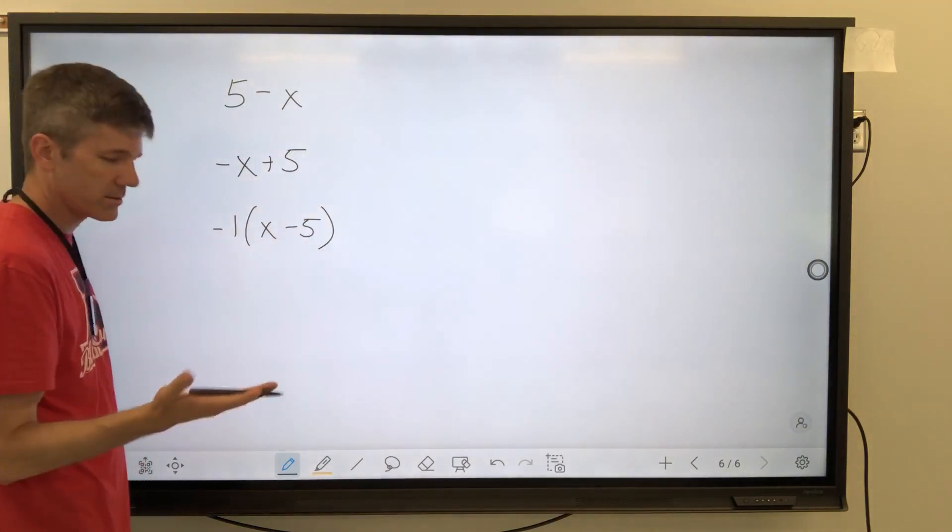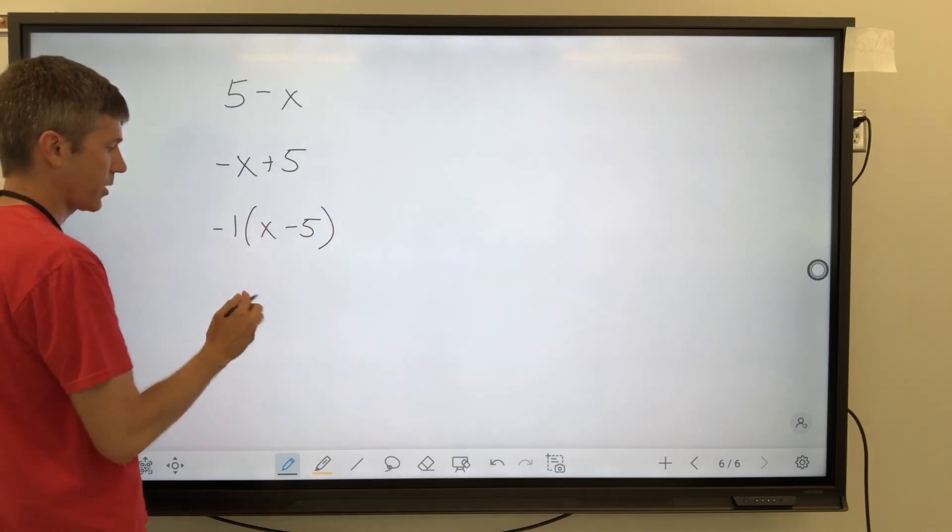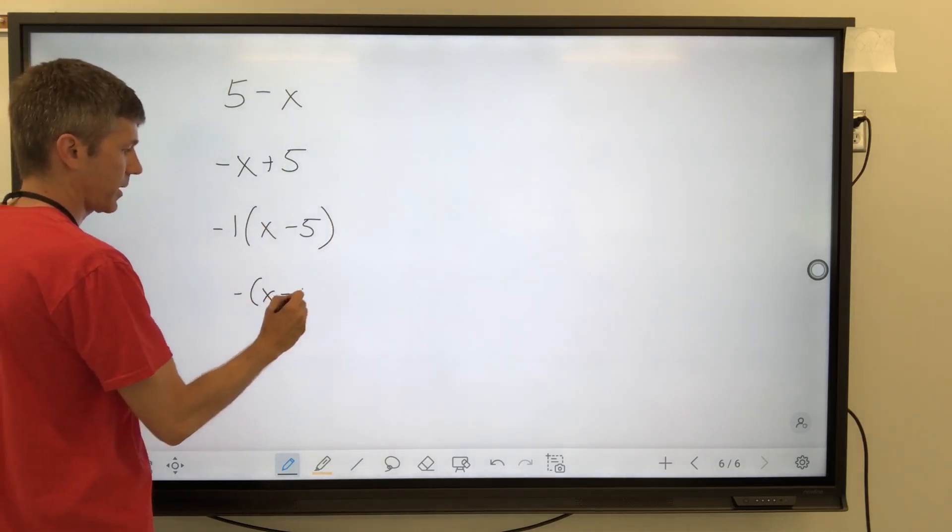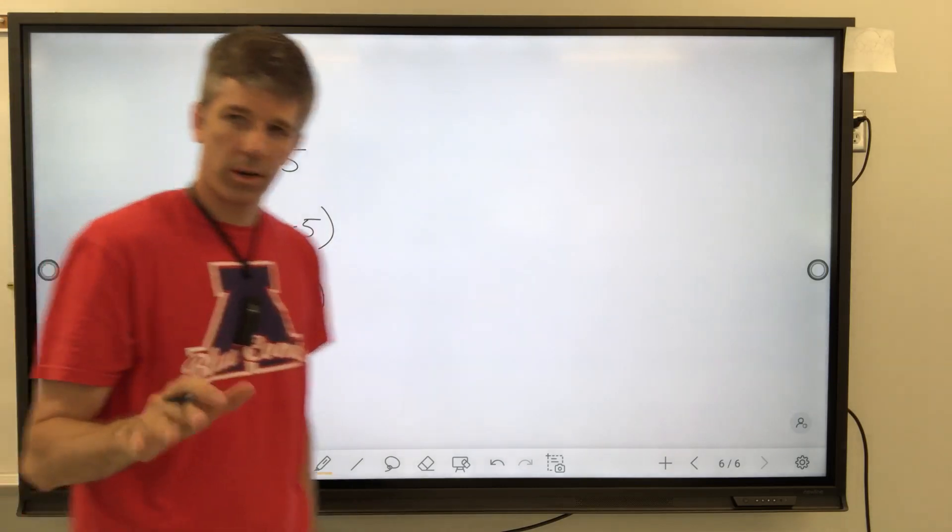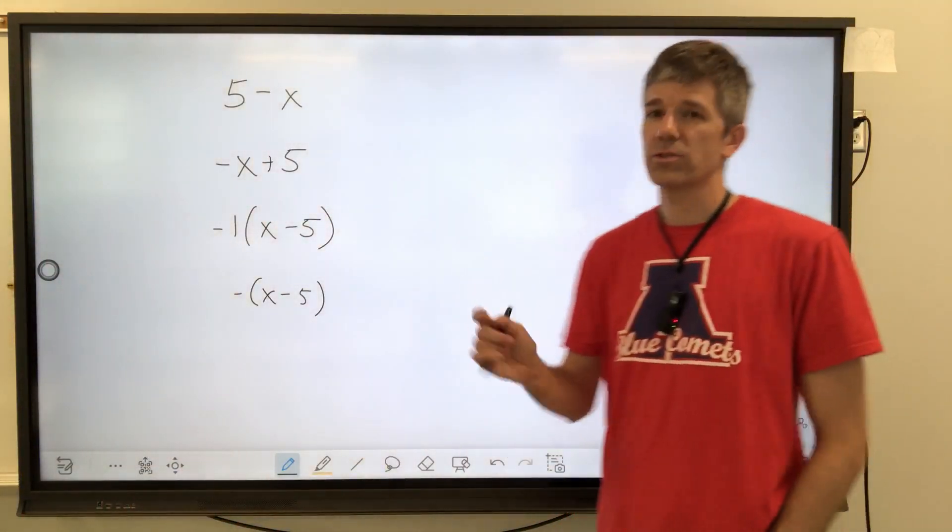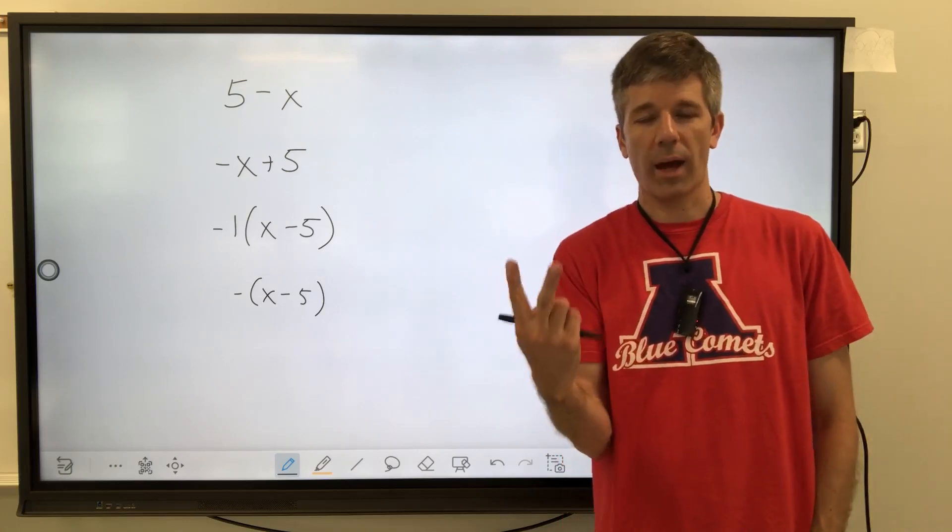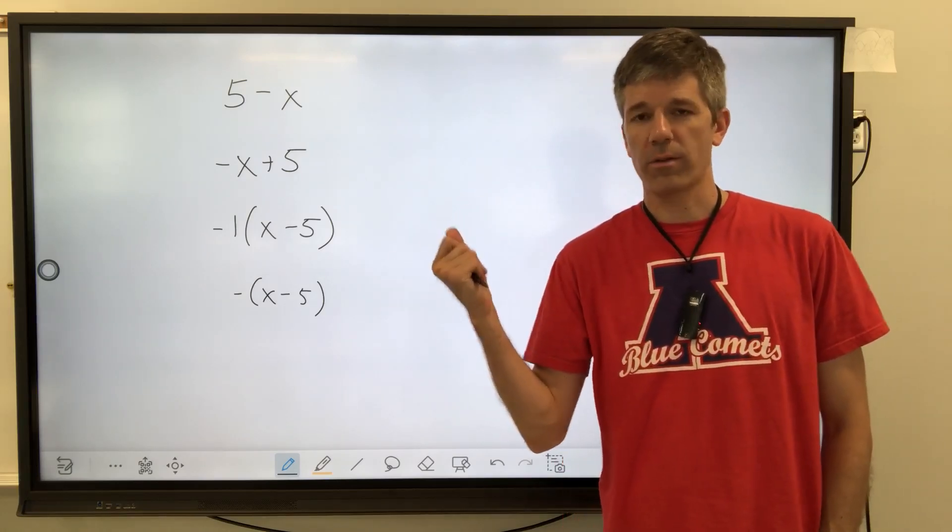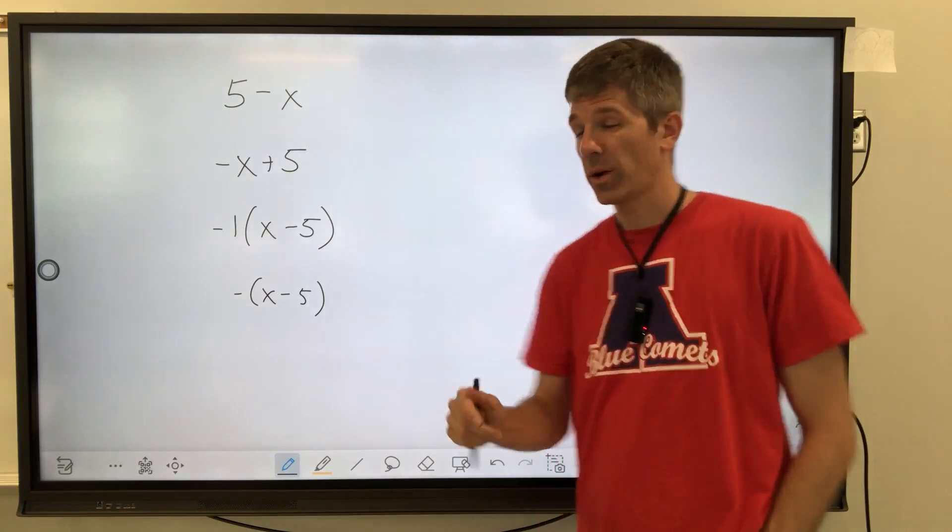And so then, and this is what was written here is correct, but you could just put negative and then x minus 5. So here is the point of this problem. I want you to be able to identify something that's written backwards with subtraction and just turn it around and factor out a negative 1. Let me show you what I mean.